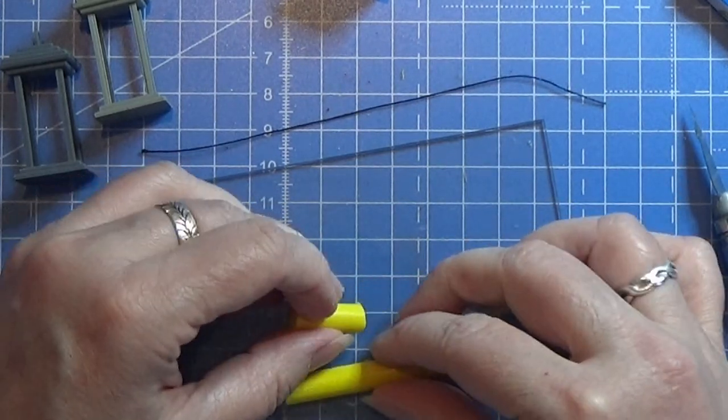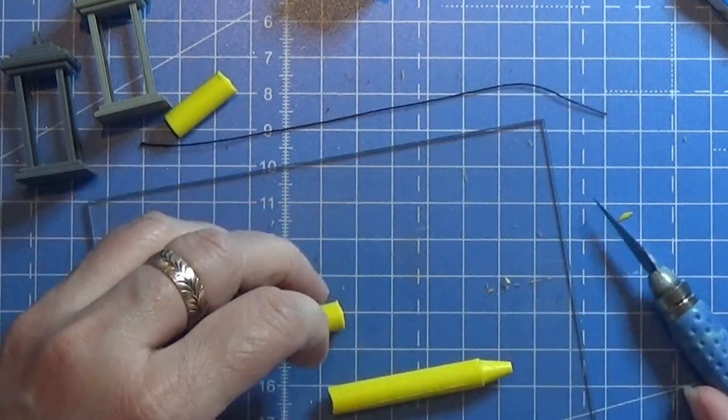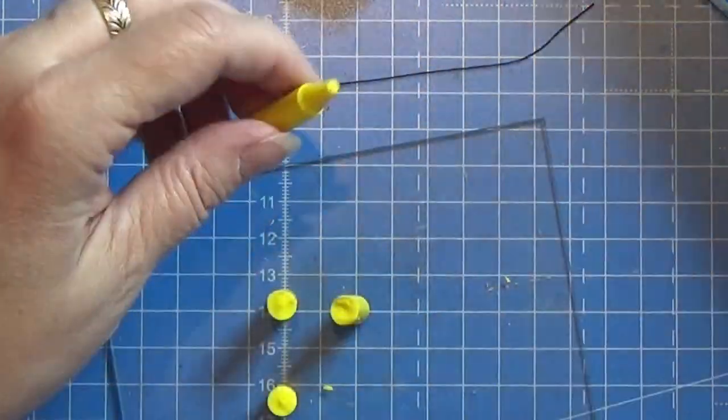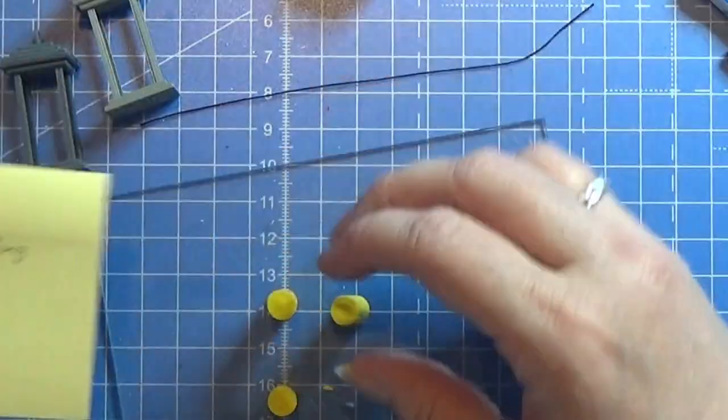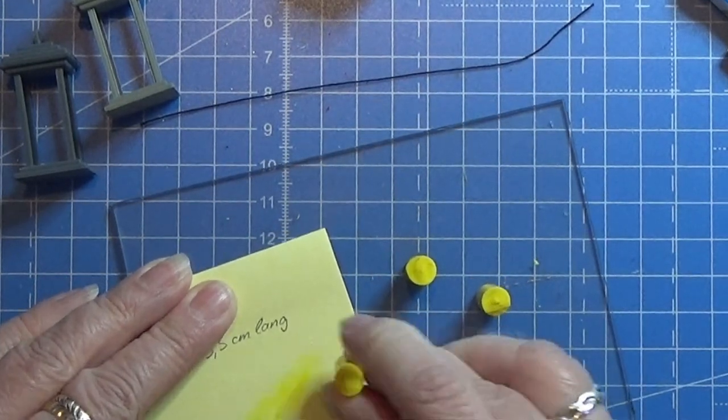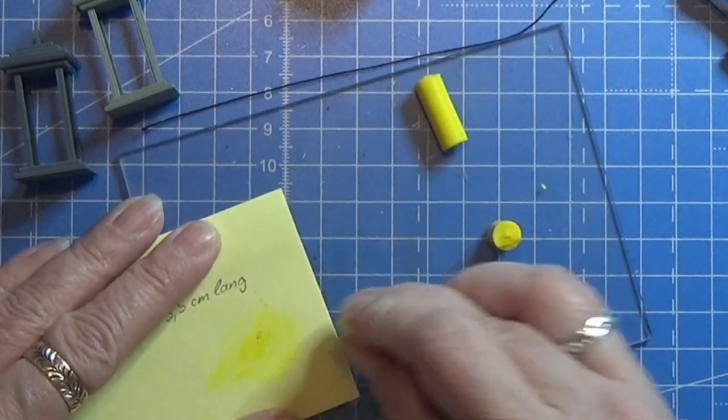I should have made them a tiny bit smaller in length, but oh well, we're going to work with this. One of the pieces didn't want to stand straight, so I just took a piece of paper and drew on it until it was smooth and nice flat on the end.